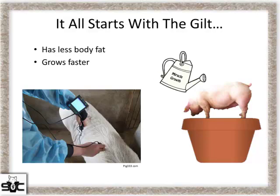Like most things, it all starts with a gilt. Today's gilt is more lean, has less body fat, and grows a lot faster than the gilt of five or ten years ago. I'm not saying that directly drives durability issues, but when we talk about metabolic bone disease, bone growth, and bone strength, a faster-growing gilt, if not managed correctly, is more likely to become a lame animal and a future mortality.